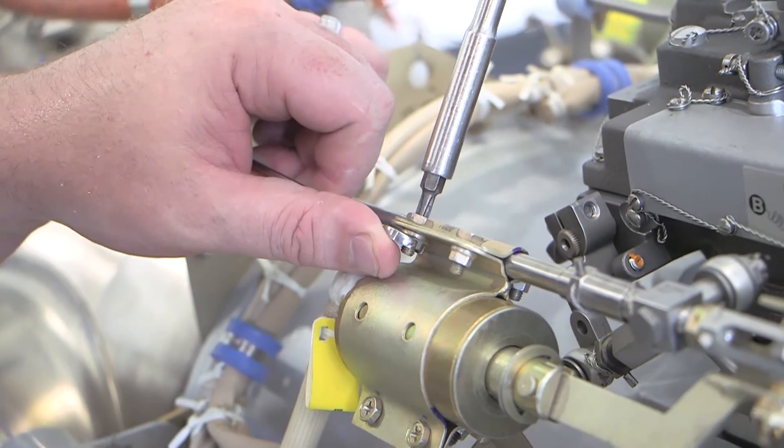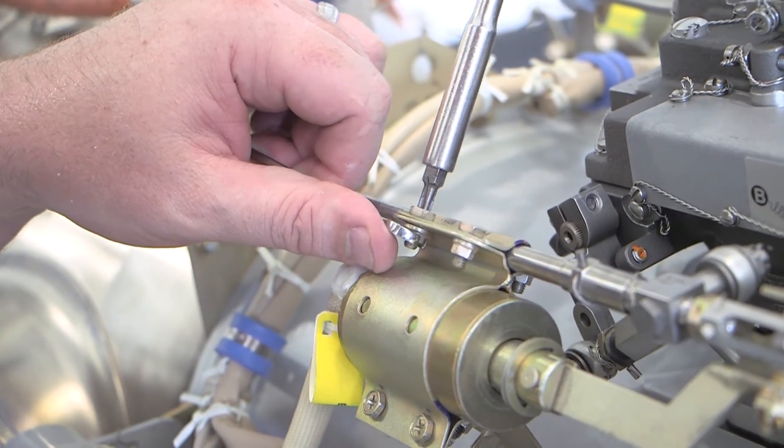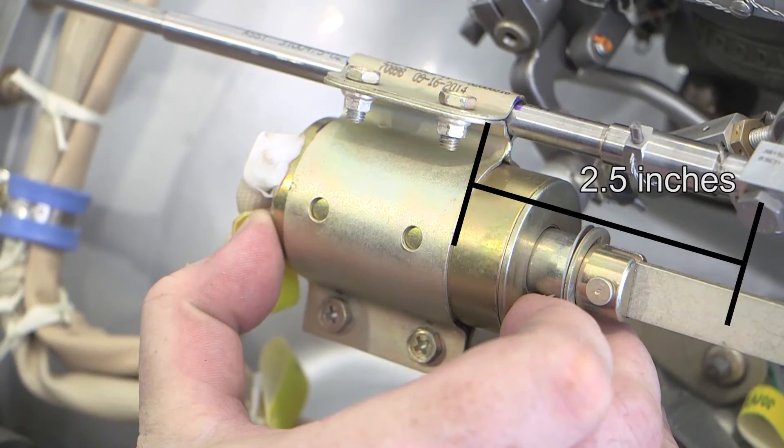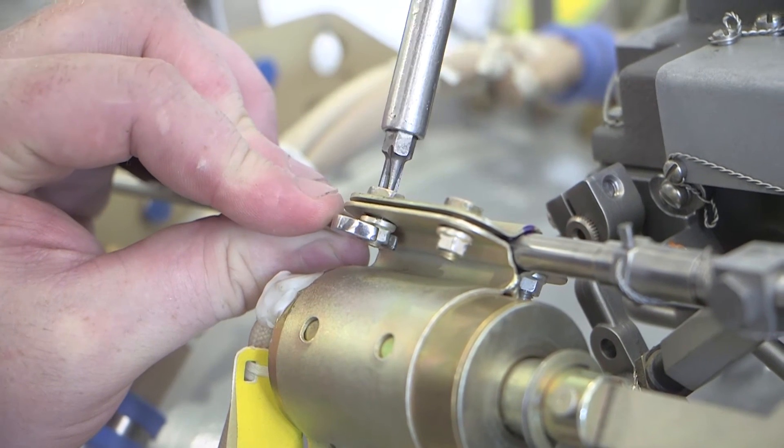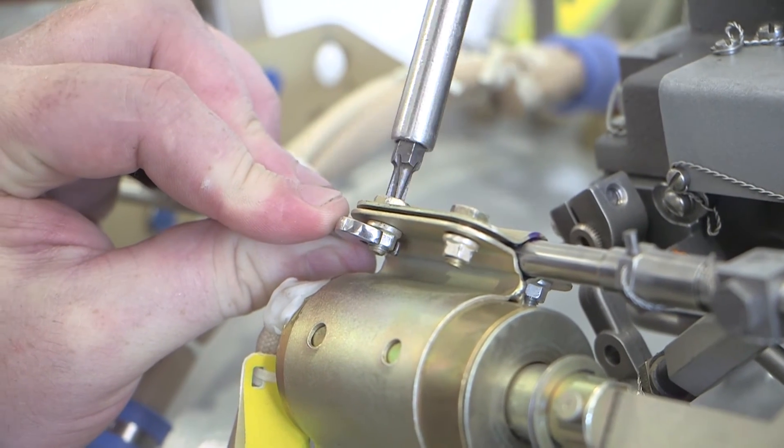The forward edge of the solenoid bracket should be adjusted so that it is 2.5 inches from the center of the screw holding the NF link. Tighten and secure the bracket onto the reversing cable.